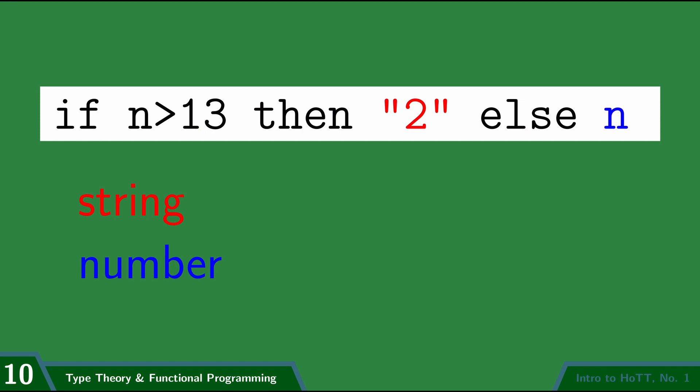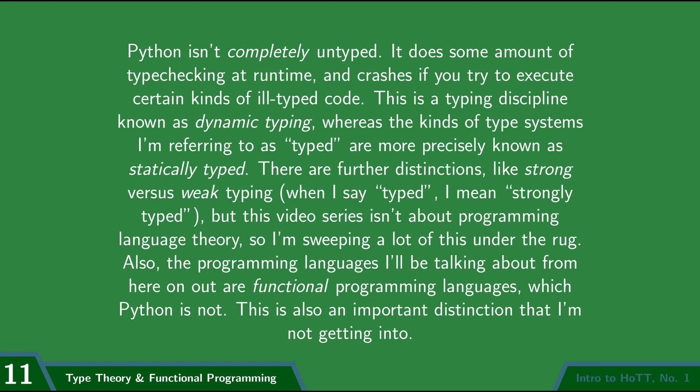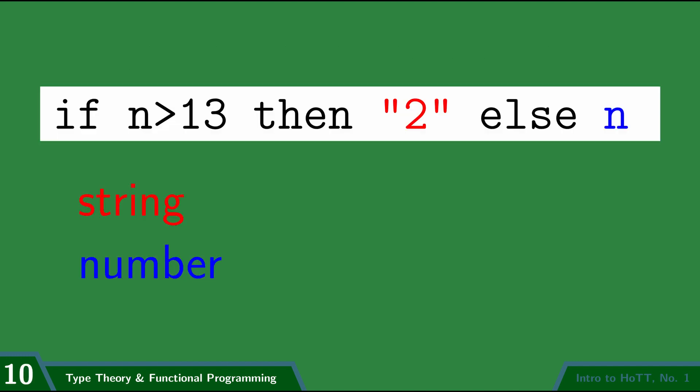If you assumed that the output of this would be a number, then you're going to get strange behavior if n is ever greater than 13, because it'll actually be a string. The programming language Python is, in this sense, an untyped programming language, because it allows this sort of thing. We saw that it was perfectly happy to let me write a program which sometimes returned a number and sometimes returned a string.